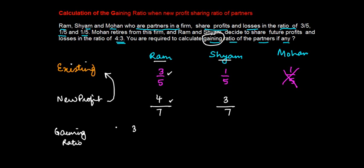So the gaining ratio for Ram equals the new profit sharing ratio minus the old: 4/7 - 3/5. 35 is the LCM of 7 and 5. This gives us (20 - 21)/35 = -1/35. So Ram has actually made a loss.